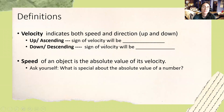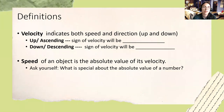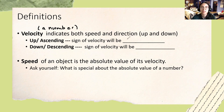We're going to begin with some important definitions and define velocity and speed. Velocity indicates both speed and direction — up and down. Velocity is a number and it has a sign. If your object is moving up or ascending, the sign of the velocity is going to be positive. If your object is moving downward or descending, then the sign of the velocity will be negative.